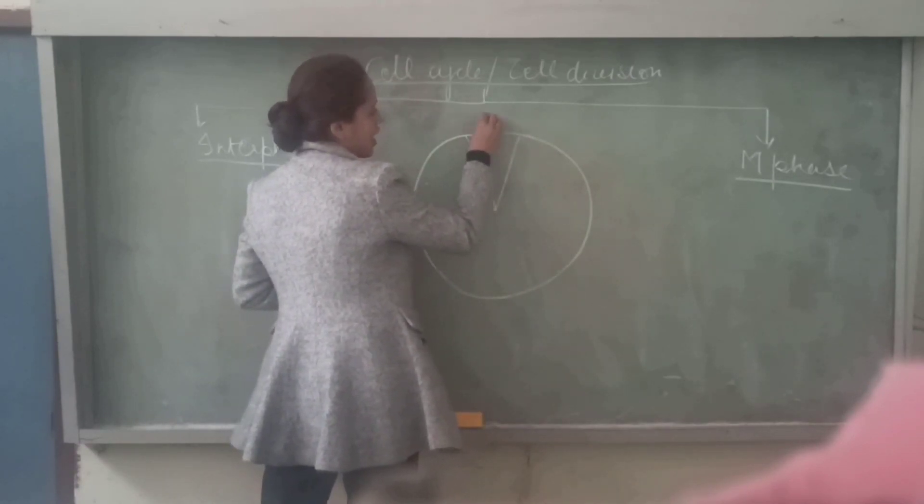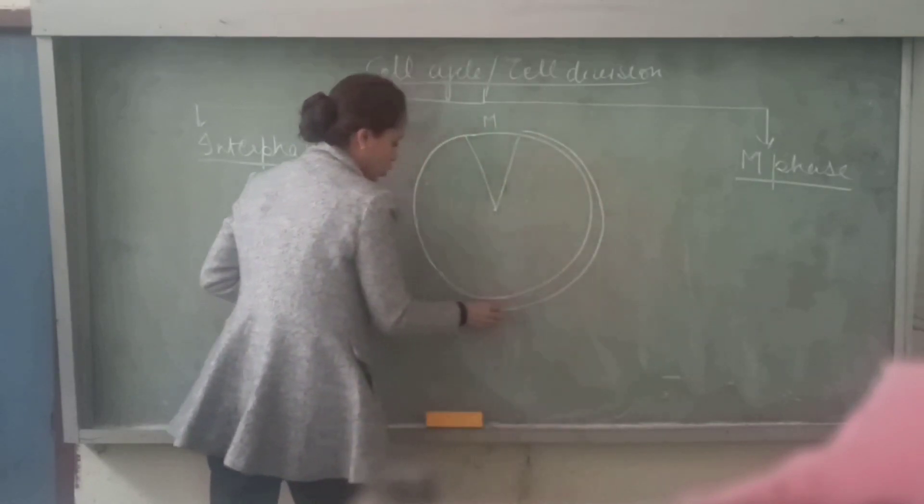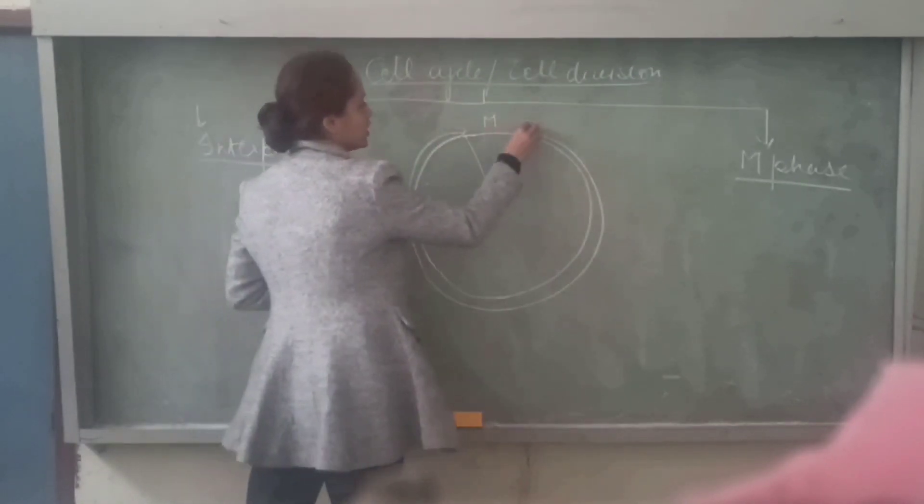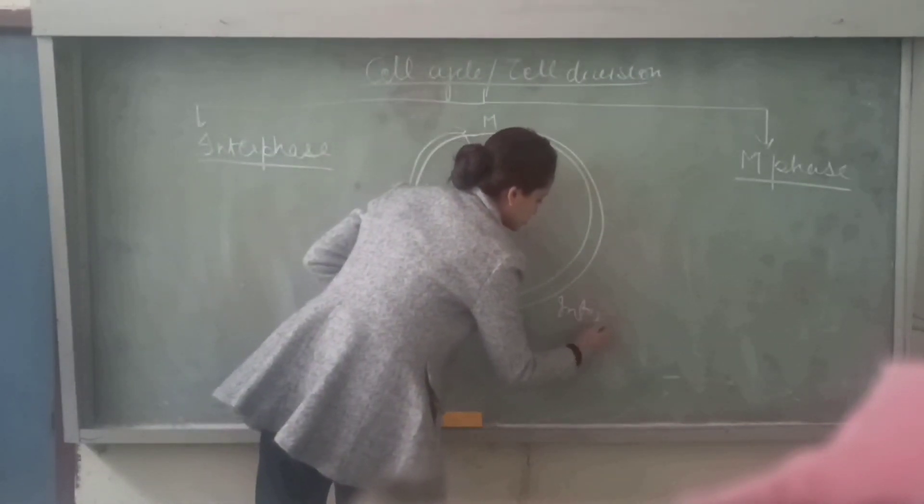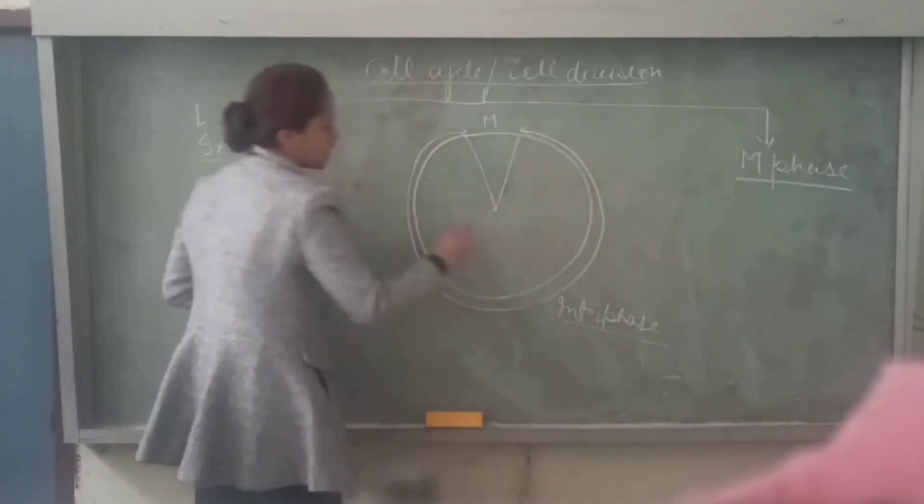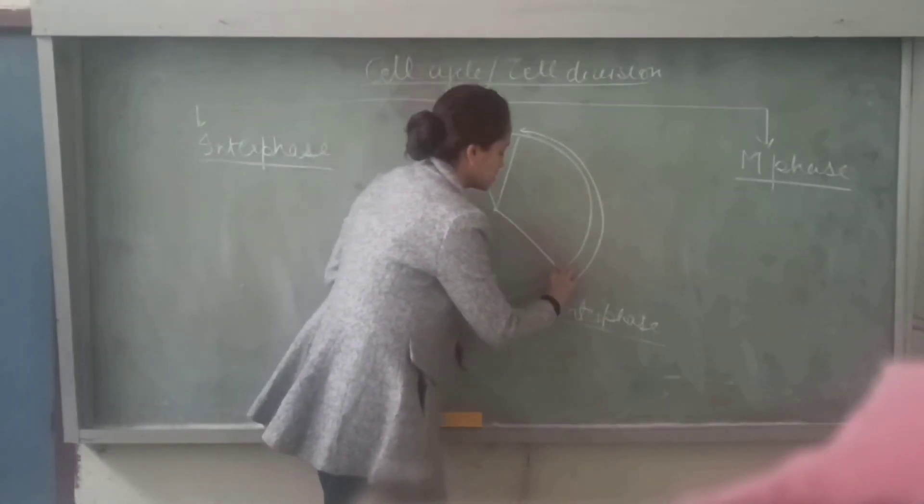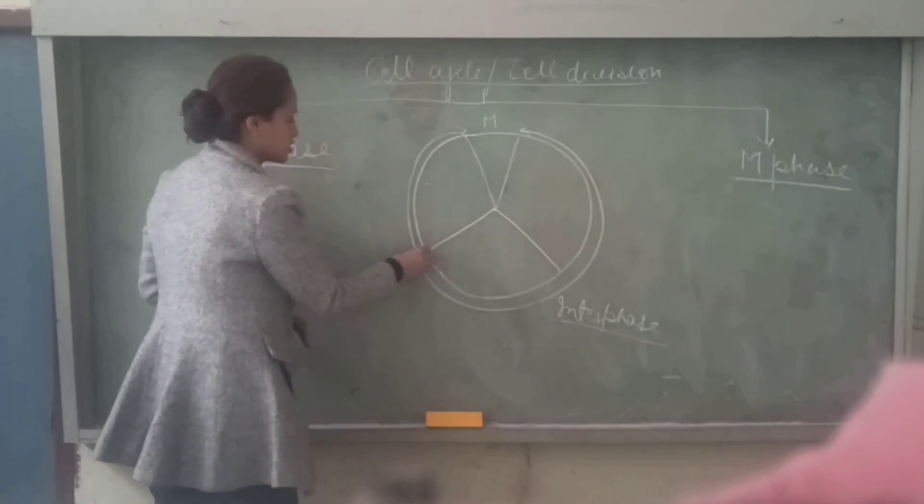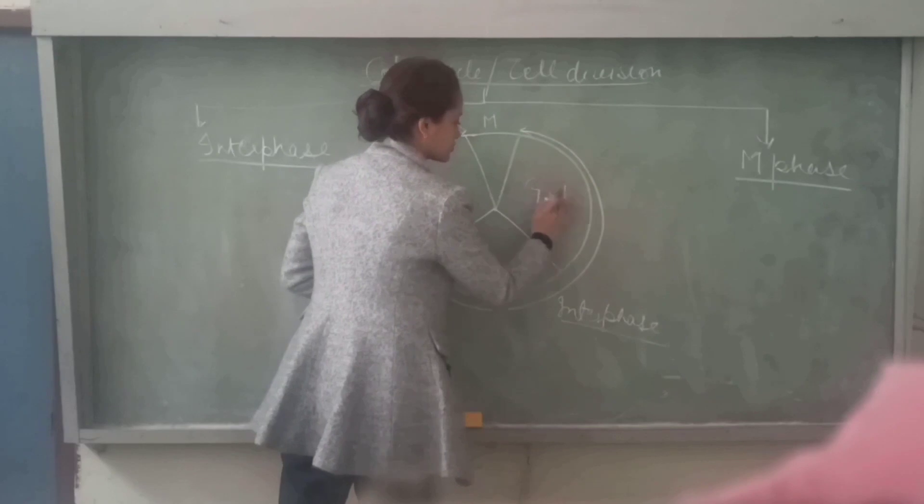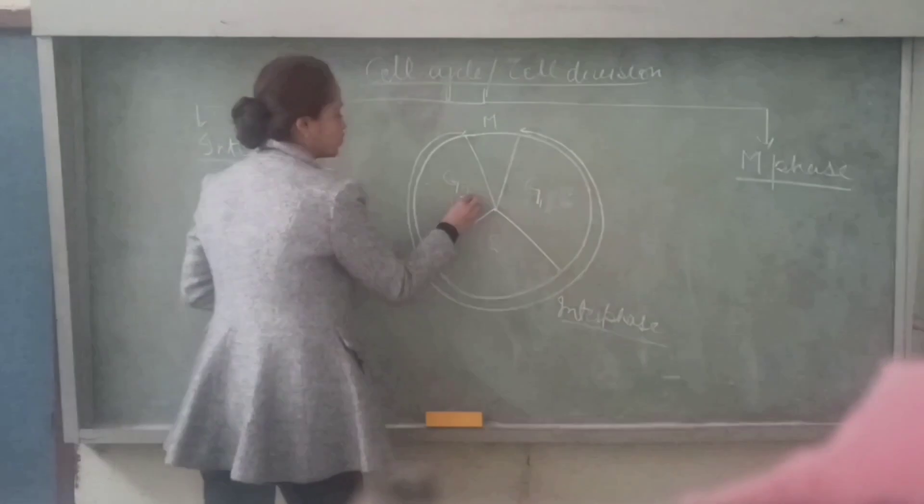This is the M phase and this whole part represents the interphase. This interphase now has three phases: G1 phase, S phase, and G2 phase.